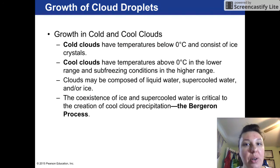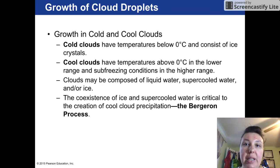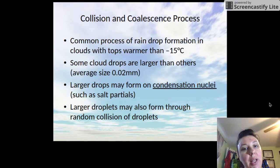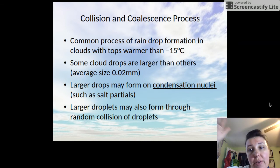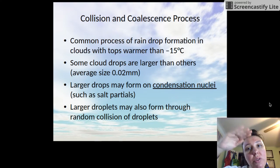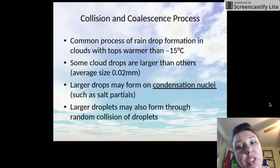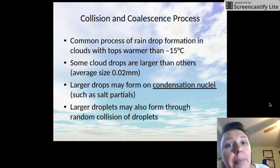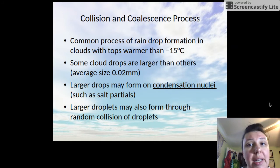Before going into the cold cloud process, I want to flip to some slides to show you these terms. Key points: collision coalescence or warm cloud process is common at cloud tops. The lifting condensation level is the bottom of the cloud, and if the topmost regions are warmer than negative 15 degrees Celsius, we consider this a warm cloud. Warm clouds are highly common in tropical regions.